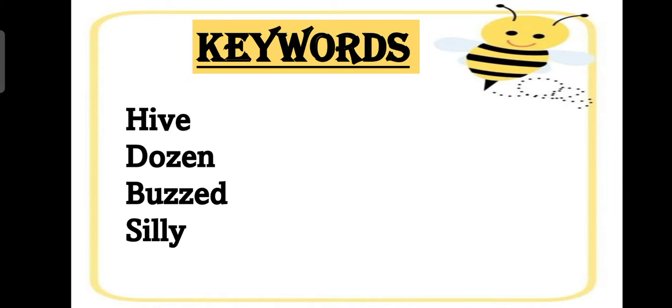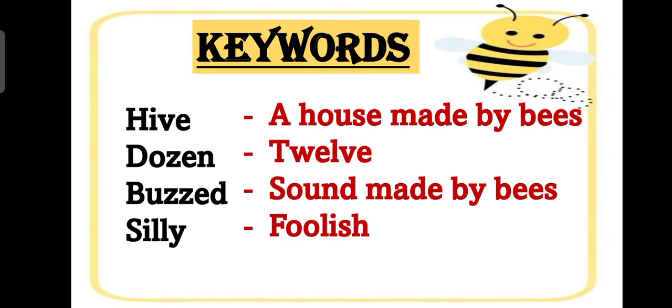Second dozen, third keyword is buzzed, and the fourth and last keyword is silly. Hive means a house made by bees. Dozen means twelve. Jab bhi koi cheese jab bhi koi things ya koi bhi cheese number of twelve hoti hai, jab bhi koi cheese twelve hoti tho ham usse kya bolte hain dozen, like one dozen banana.